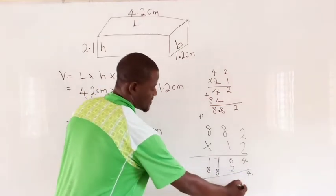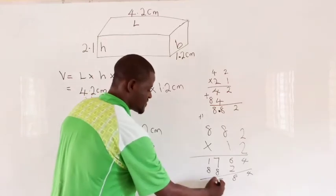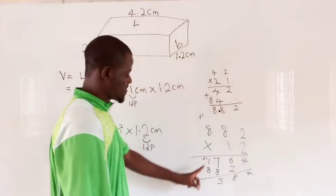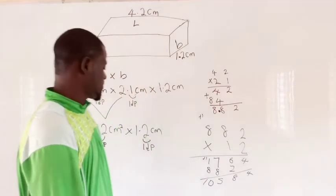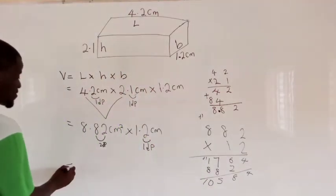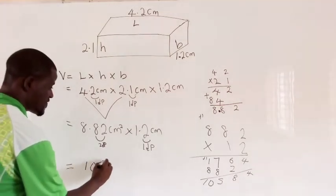4, 8, 7 plus 8 is 15. Write 5, move 1 to this place. 1 plus 8 is 9, plus 1 is 10. So we are going to have 10584.